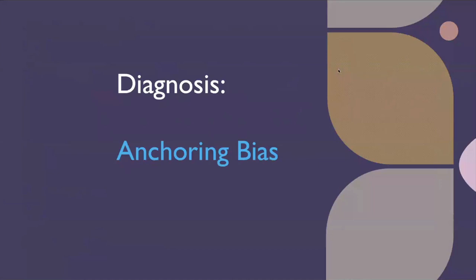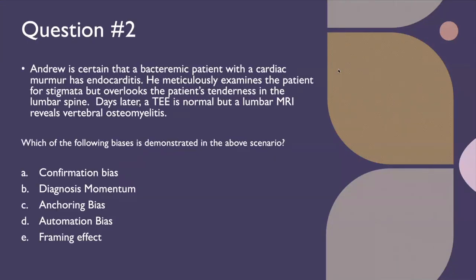Question number two: Andrew is certain that a bacteremic patient with a cardiac murmur has endocarditis. He meticulously examines the patient for stigmata but overlooks the patient's tenderness in the lumbar spine. Days later, a TEE is normal, but a lumbar MRI reveals vertebral osteomyelitis. Which of the following biases is demonstrated? Is it confirmation bias, diagnosis momentum, anchoring bias, automation bias, or framing effect?